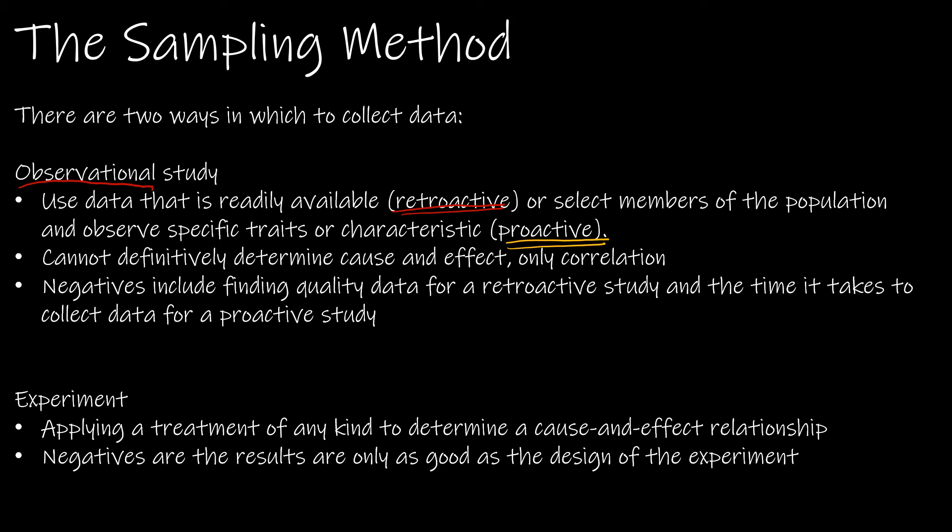Negatives of an observational study: sometimes it's difficult to find quality data for a retroactive study — you simply can't find the data from the past. And there's the time it takes to collect data for a proactive study. For instance, does drinking milk as a child affect your bone density when you're 80? That's an 80-year span — you have to watch children, track whether they're drinking milk, and then 80 years later look at their bone density.